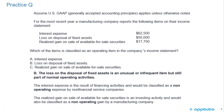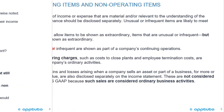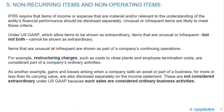The correct answer is B. The loss on the disposal of fixed assets is an unusual or infrequent item, but it's still part of normal operating activities. The interest expense is the result of financing activities and would be classified as a non-operating expense by non-financial service companies. The realized gain on sale of available-for-sale securities is an investing activity and would also be classified as a non-operating gain by a manufacturing company.